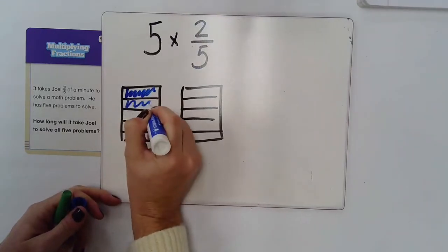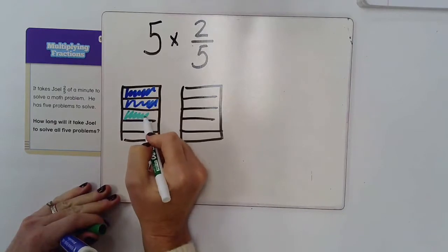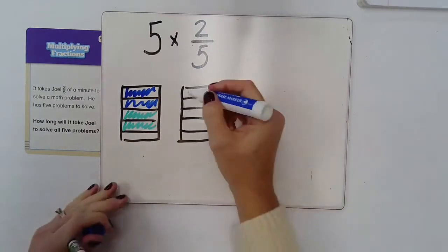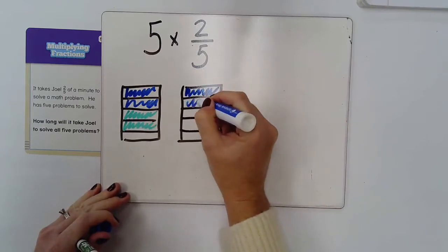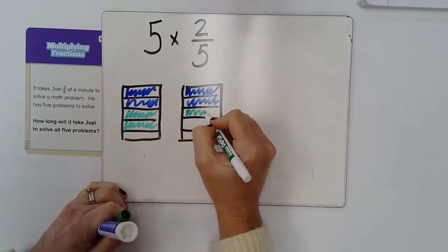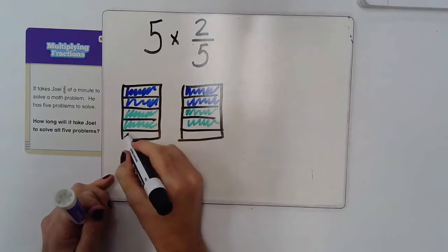So I have one, two, that's one group. One, two, that's one group. And then I have my last, my fifth group here.